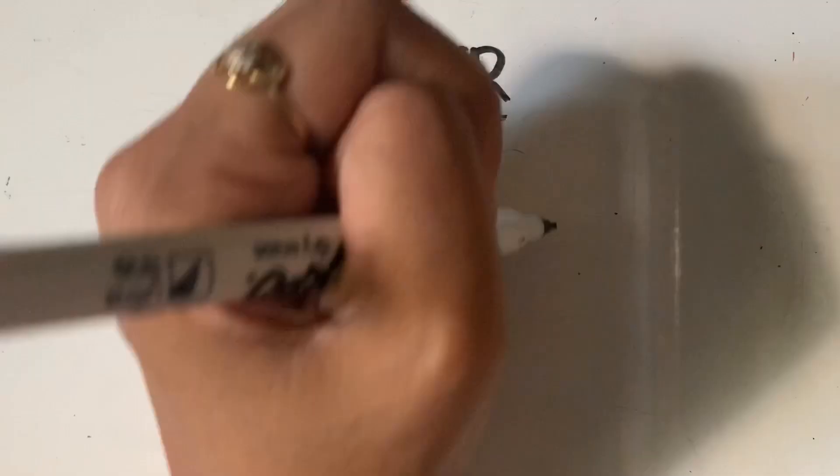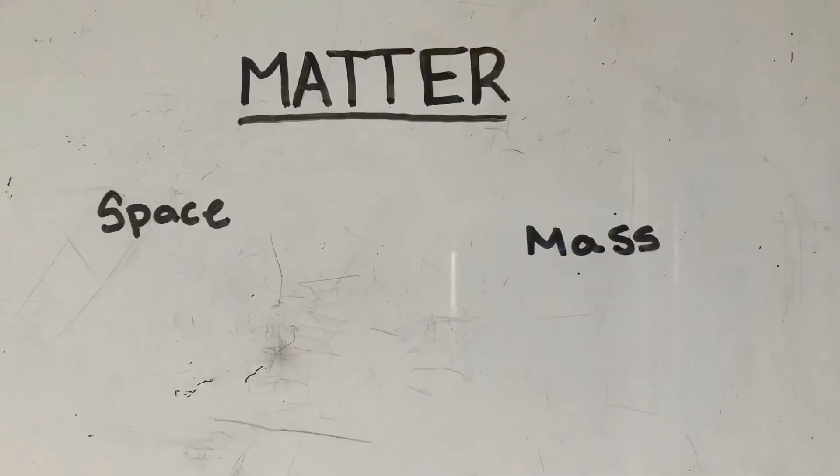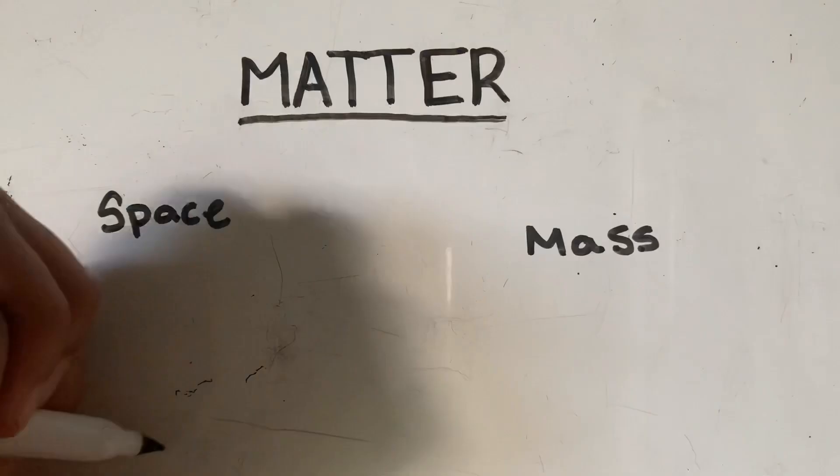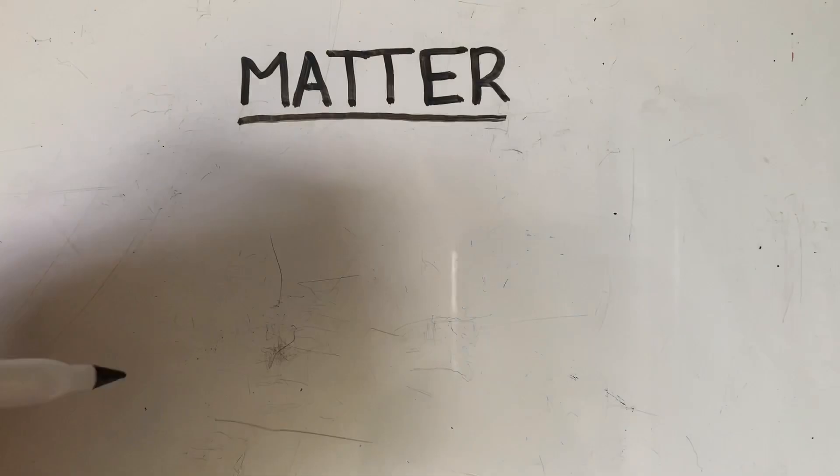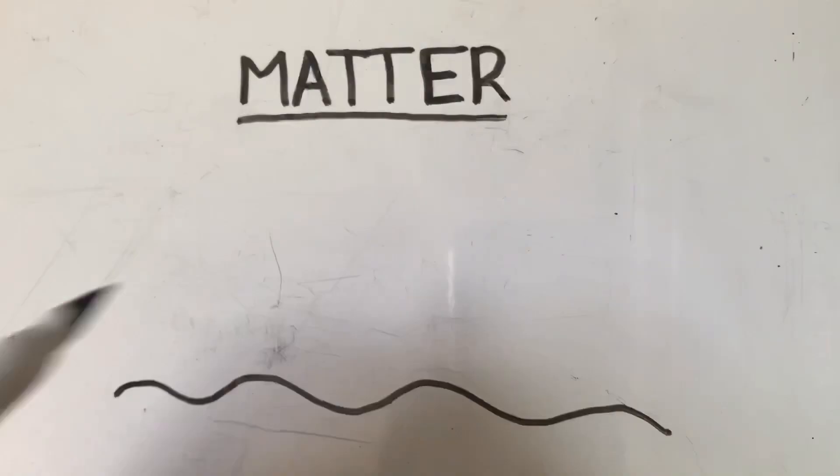Classification of matter. Matter is anything that has mass and takes space. It can be anything that we can touch or see like water, mountains and plants, or anything that we cannot like air.